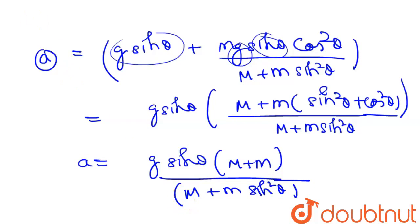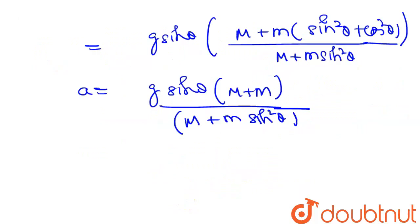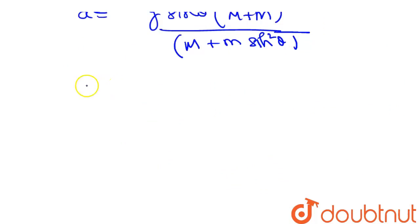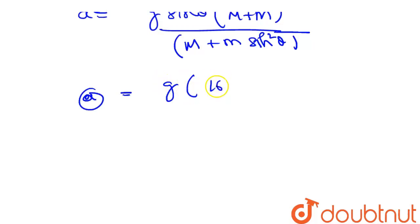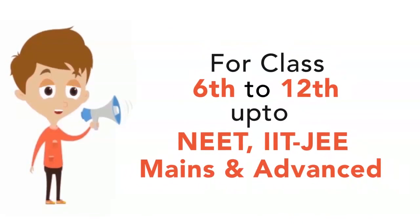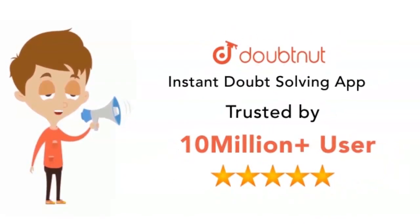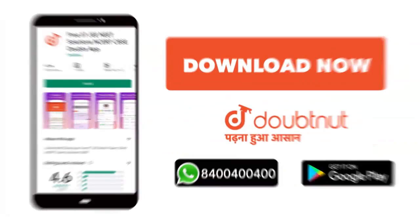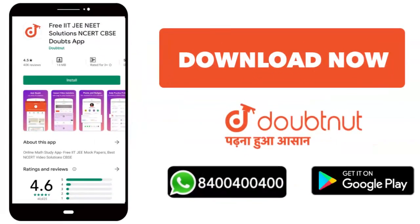The final answer for the acceleration a is expressed in terms of g, theta, capital M and small m. This is a classic problem at the IIT JEE Mains or Advanced level. Over 10 million students use DoubtNet today. Download the DoubtNet app or WhatsApp 8444-444.